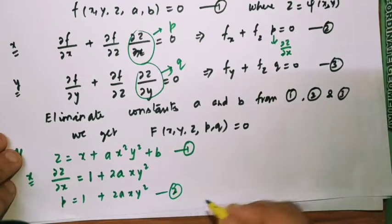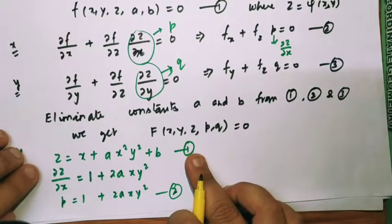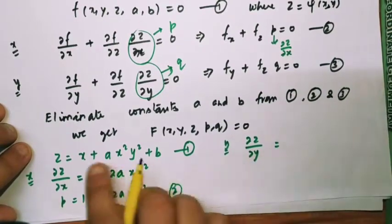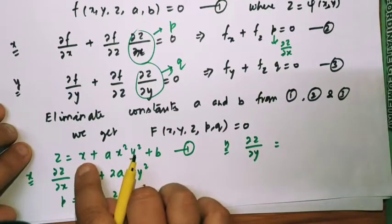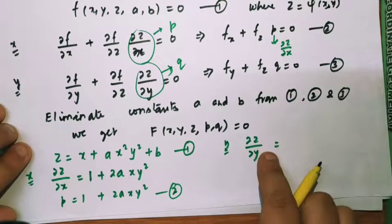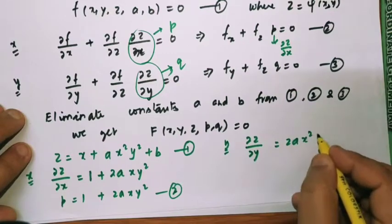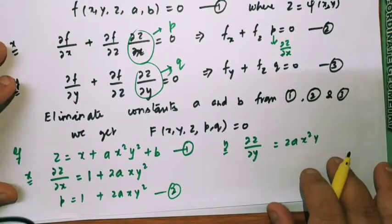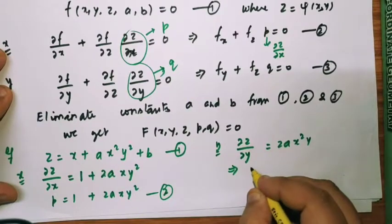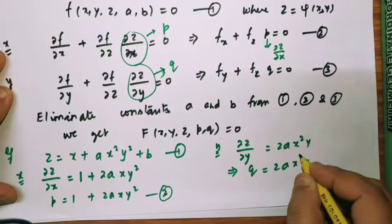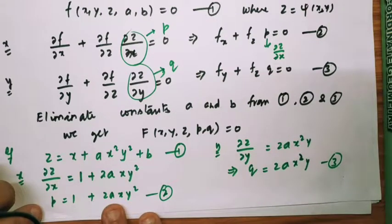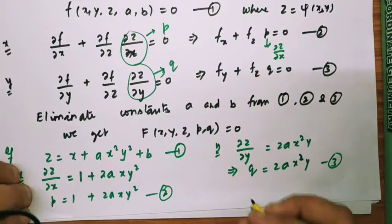Now I will differentiate equation 1 with respect to y. Differentiating partially with respect to y, keeping x as constant: ∂z/∂y = 2ax²y, and b is also a constant so its derivative is 0. So the third equation is q = 2ax²y. Now, notice that b is automatically eliminated from equations 2 and 3 — we do not need to separately eliminate b.